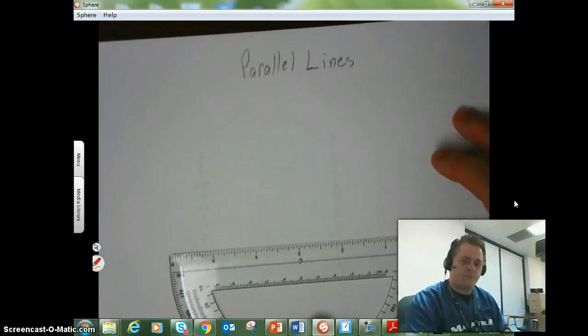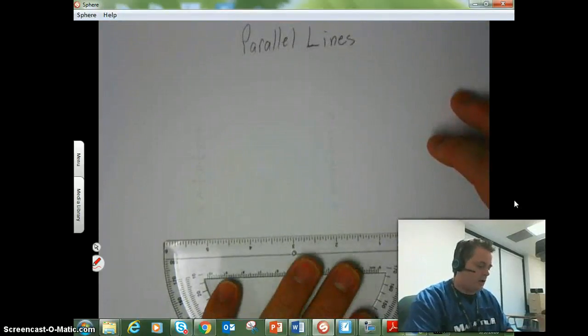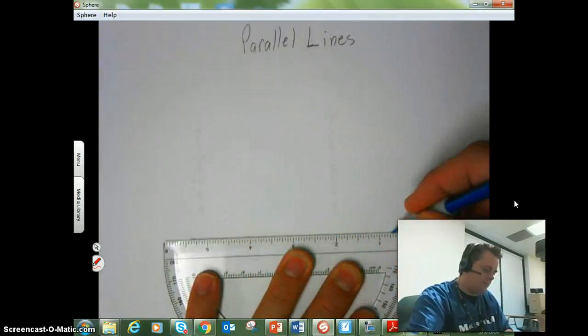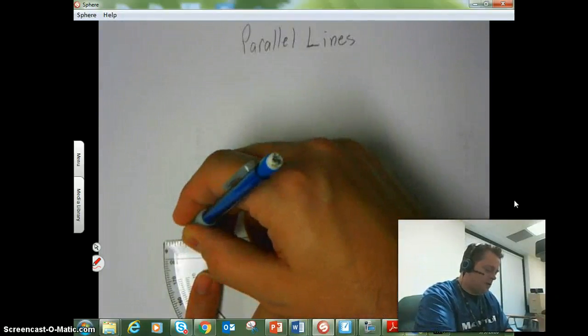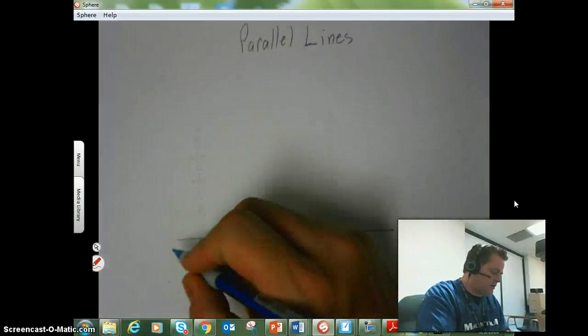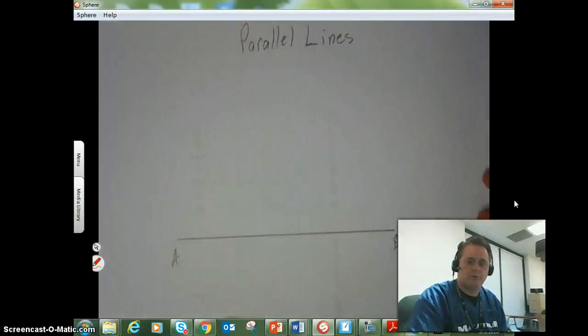I'm going to come down here to the bottom part of my paper and draw a line segment. I'm making this one a little bit longer than I've made some of my other basic line segments, and we'll call this one AB.